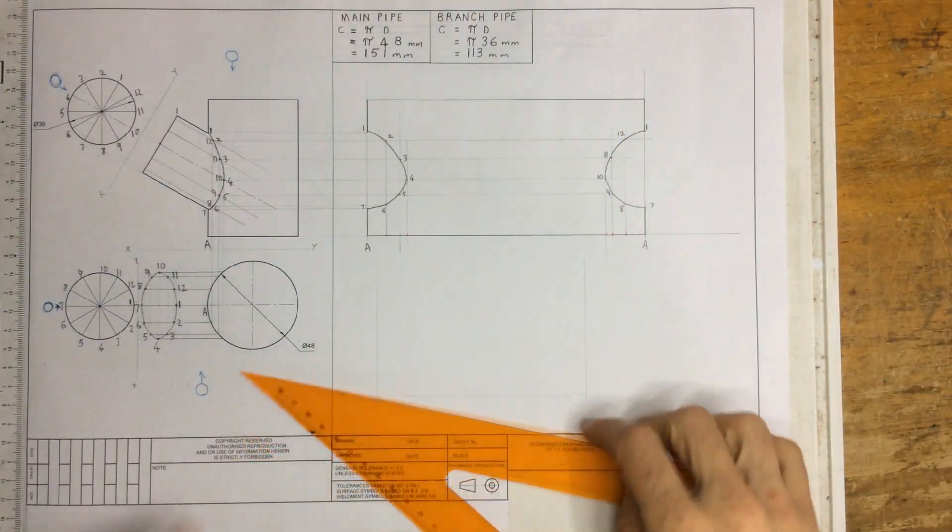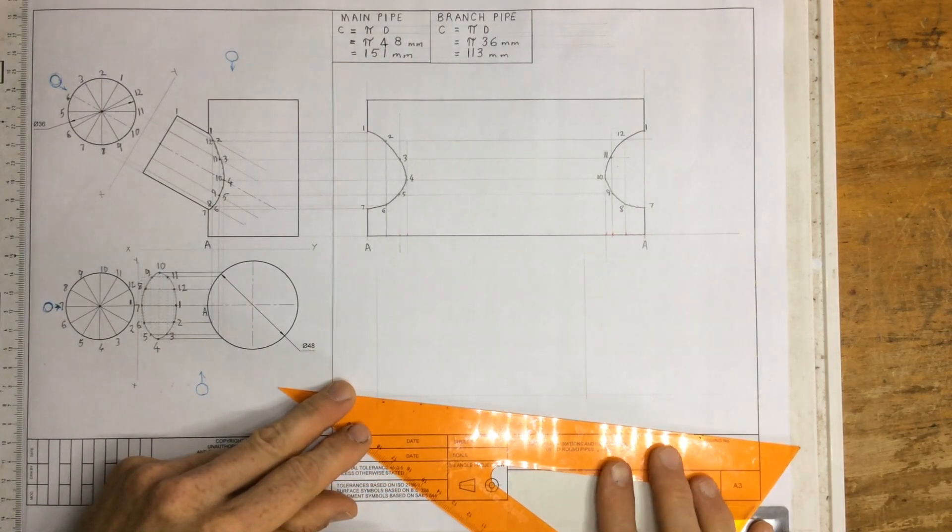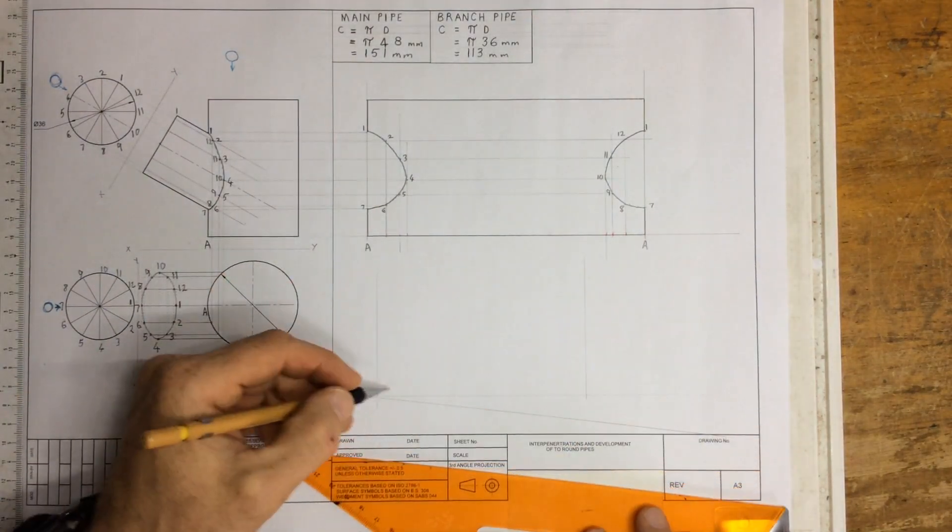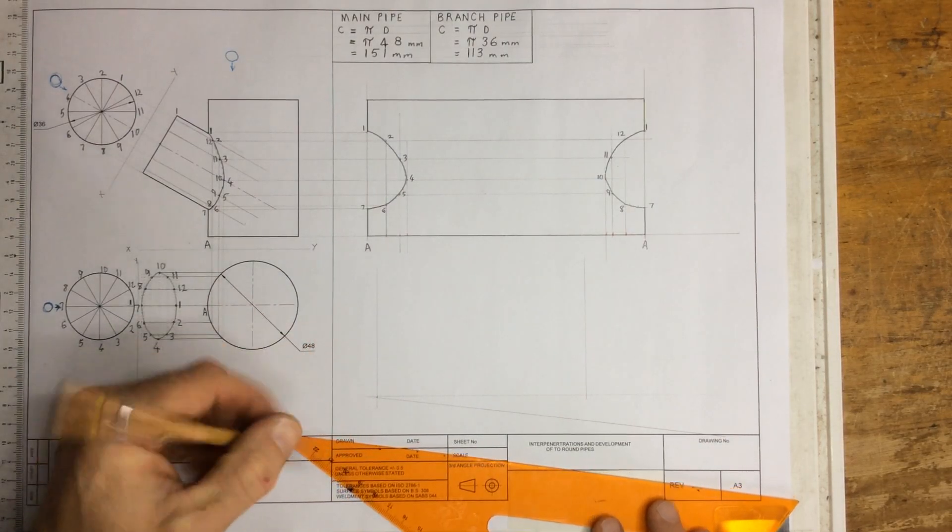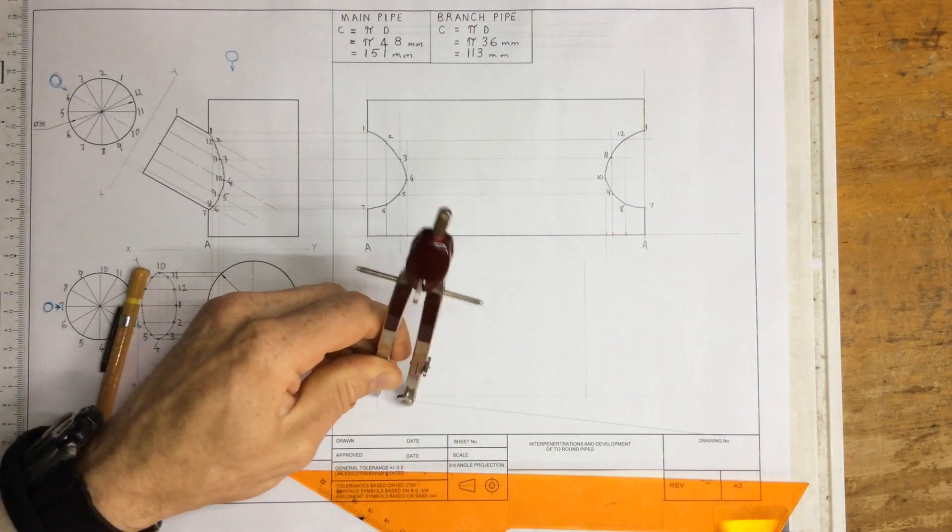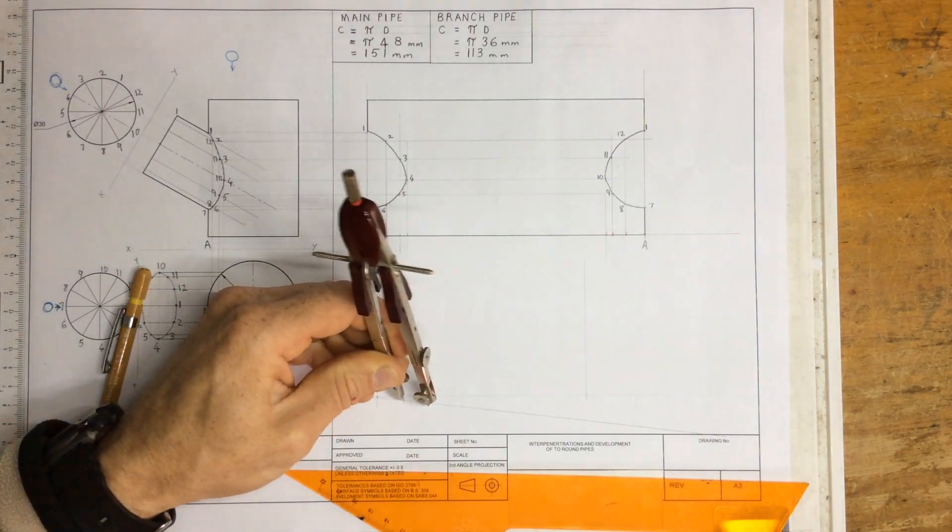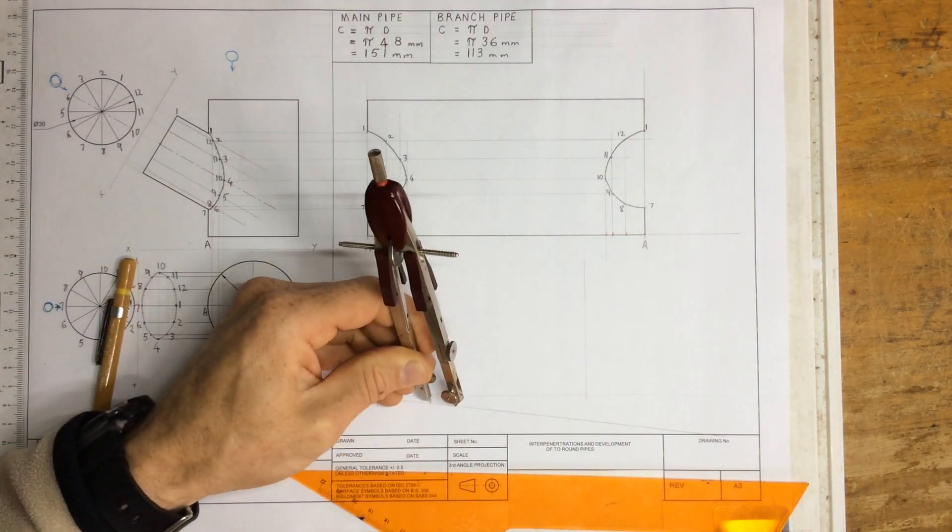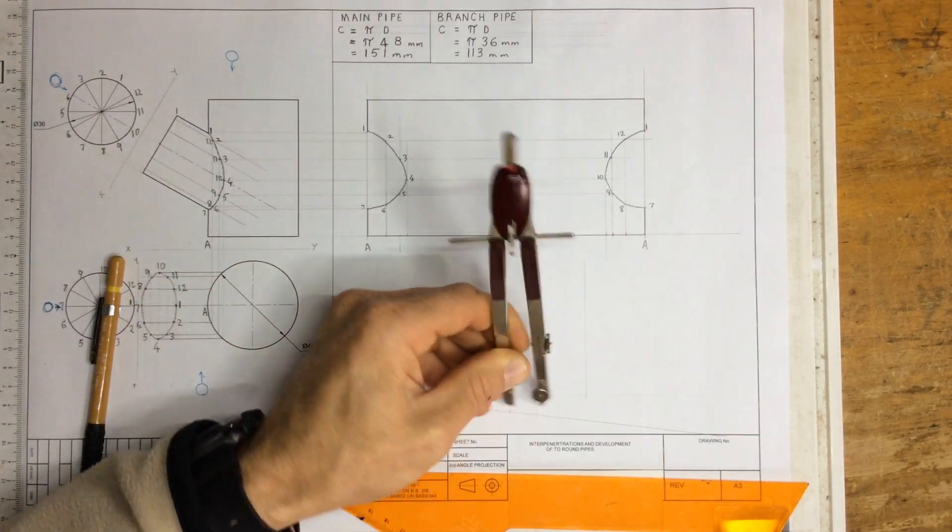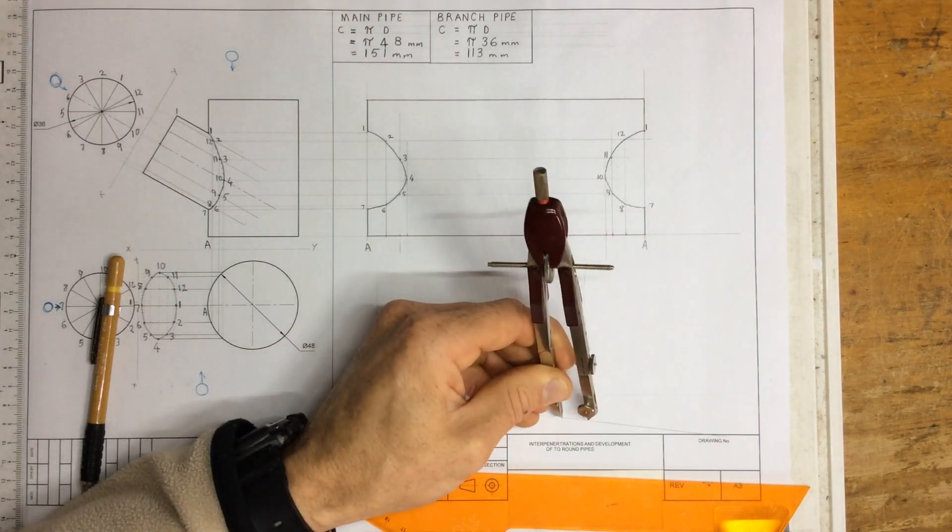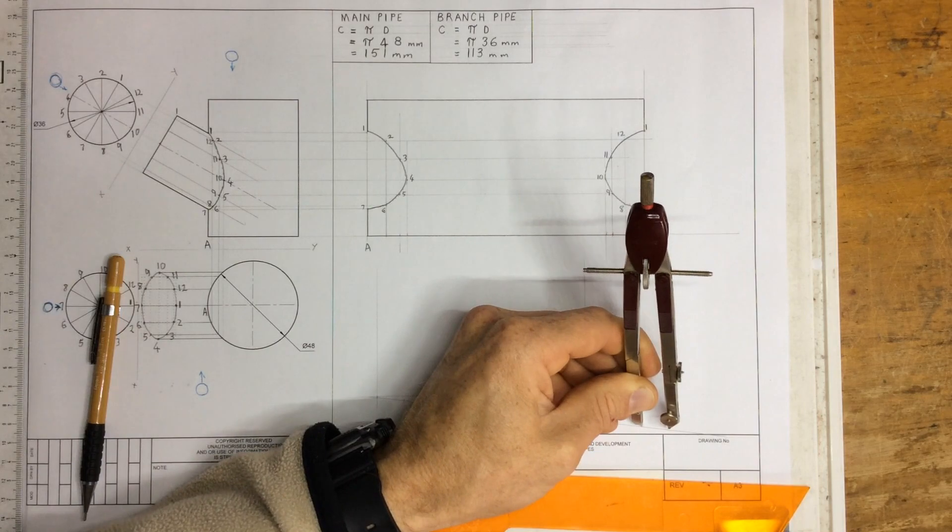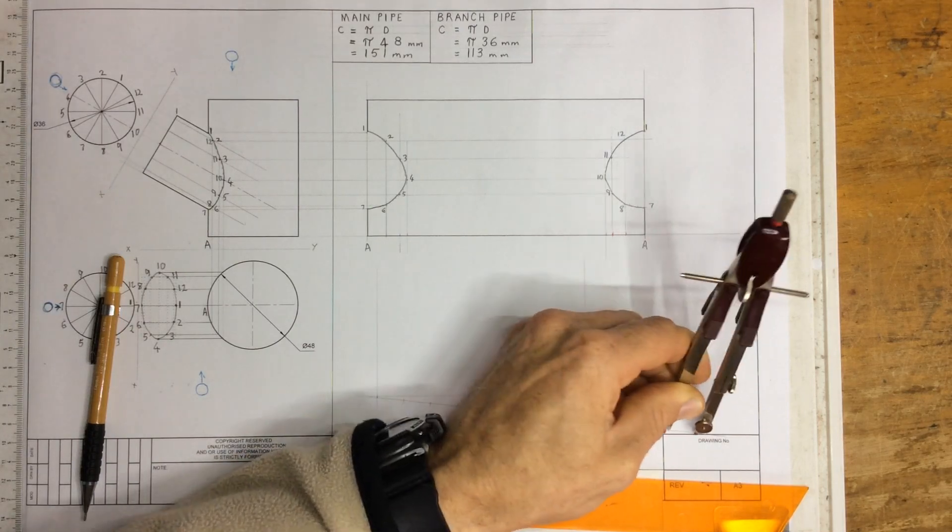The next thing I need to do is break that line up into 12 equal segments. I'm going to draw a line out at any angle from that intersection. I then take my compasses or pair of dividers, and I break that up into 12 parts: 1, 2, 3, 4, 5, 6, 7, 8, 9, 10, 11, and 12.